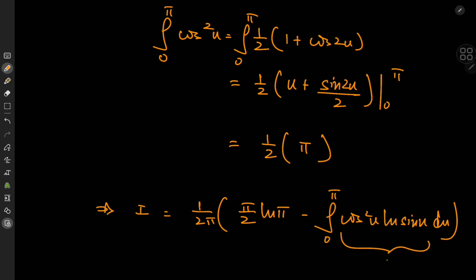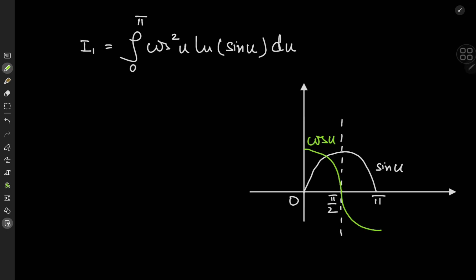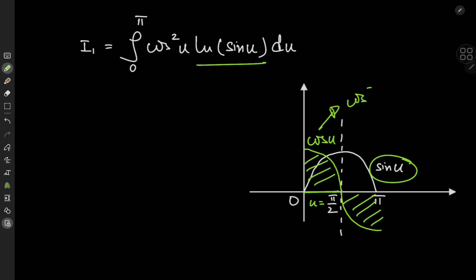We call this integral I₁, and that's our next target. For I₁ we have the log sine u term, and we see that for y equals sine u there is a nice symmetry around the line u equals pi over 2. Because of this symmetry, we could just consider the interval from 0 to pi over 2 and double the result. For the square of the cosine, both areas lie above the x-axis and are equal with respect to the line u equals pi over 2, so we can again consider 0 to pi over 2 and double.